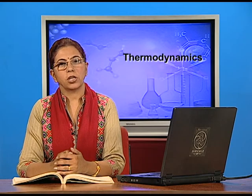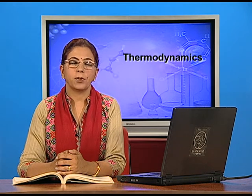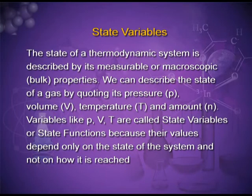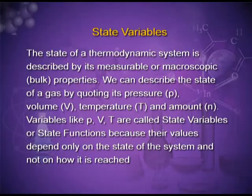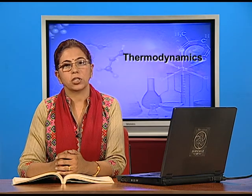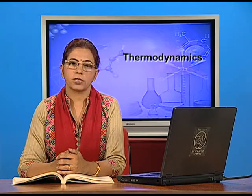To describe the state of a system, we have to specify some macroscopic properties like pressure, volume, temperature, number of moles of the substance, and composition. These are known as state variables. If there is any change in any one of these macroscopic properties, then there is a change in the state of the system.